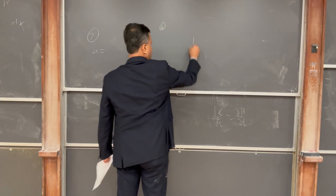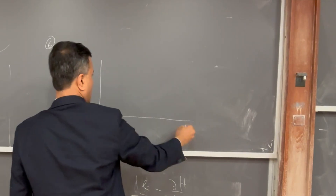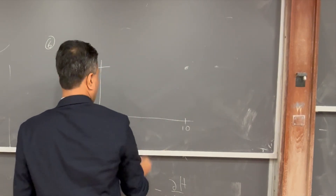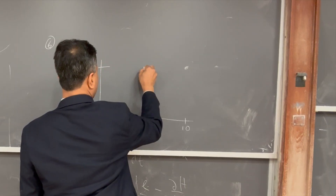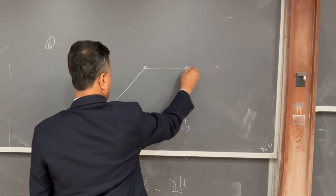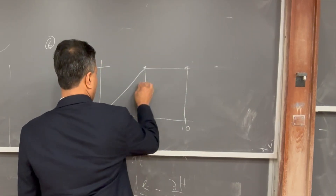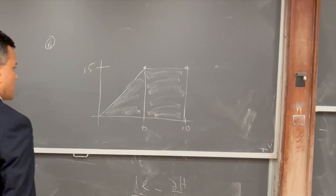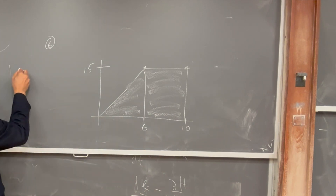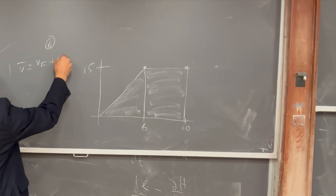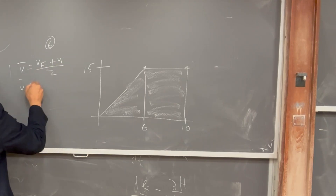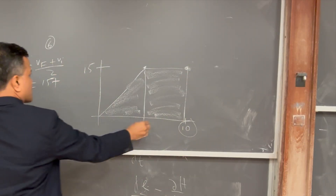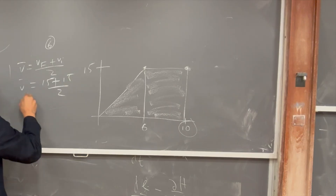Problem six: I gave you a velocity versus time graph with points (6, 15) and (10, 15). I asked for the average velocity from t = 6 to t = 10. The formula is: average velocity equals (vf + vi) / 2. Since vf = 15 at t = 10 and vi = 15 at t = 6, average velocity equals (15 + 15) / 2 = 15.